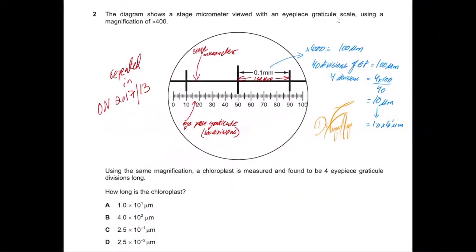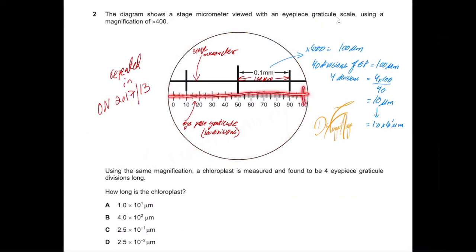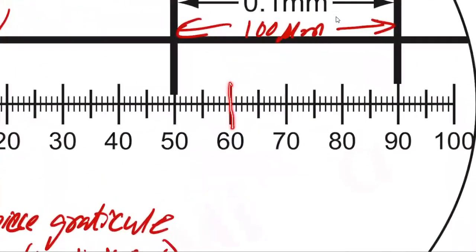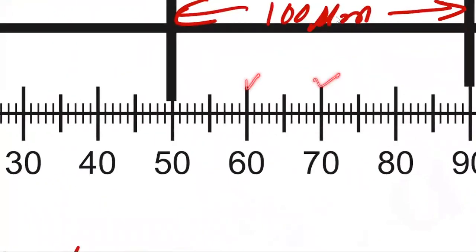What exactly is an IPS graticule? This circle here represents the view field — when you are using a microscope and looking through an IPS, this is what you see. You see there's a scale here, and this scale has 100 divisions: 0, 10, 20, 30, 40, 50, 60, 70, 80, 90, 100. Between every 10 divisions, there are 9 smaller lines, making a complete set of 10.